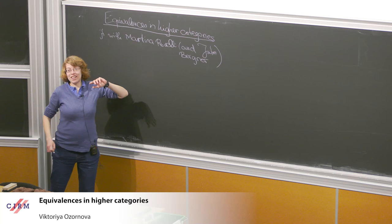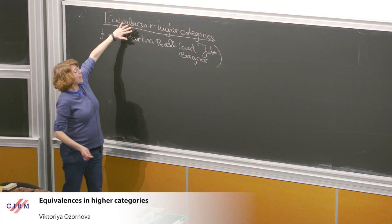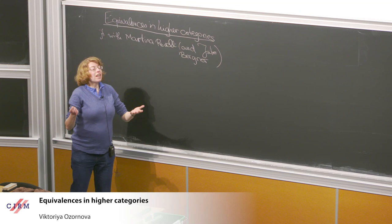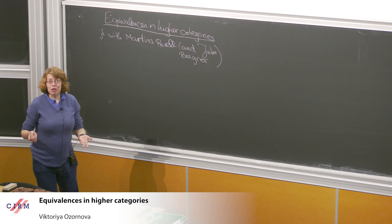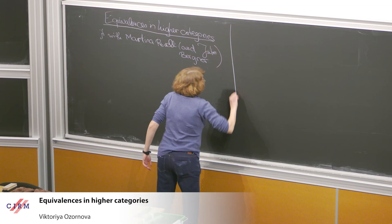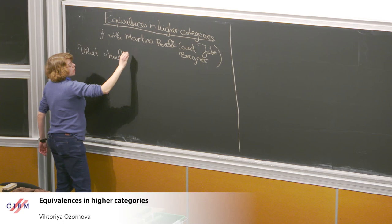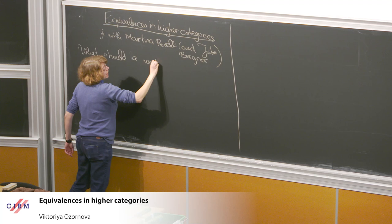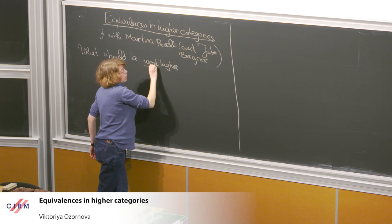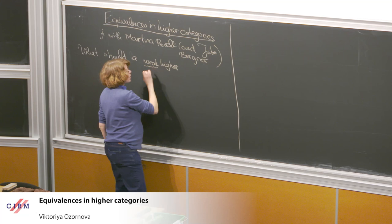We want to talk about equivalences and higher categories. I should give you some sense of what higher categories might be — there are many different answers. I'll give a fluffy answer first and then move to more definitional answers. What should a higher category be? Given that I'm speaking mainly to homotopy theorists, I would start with weak higher categories, specifically infinity-n categories.